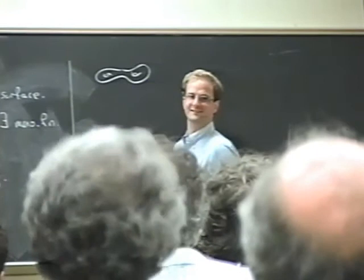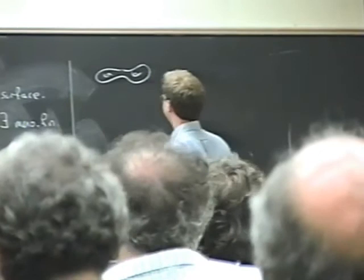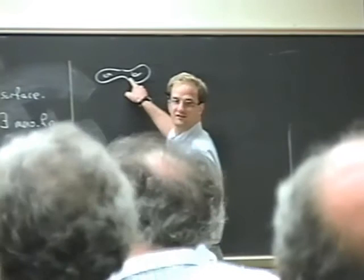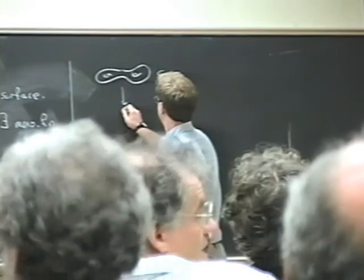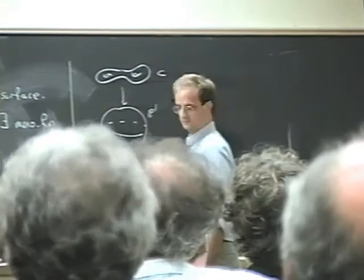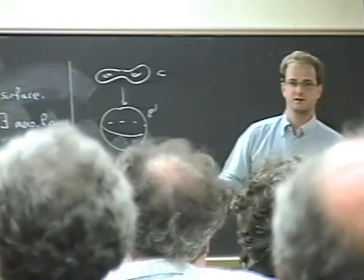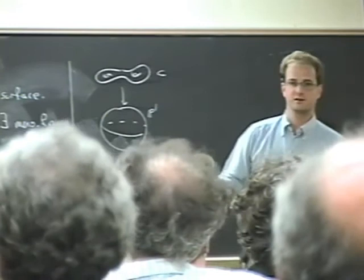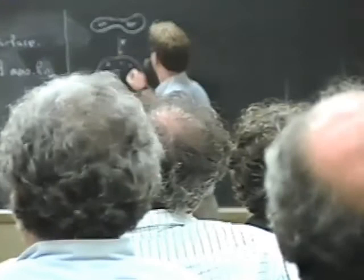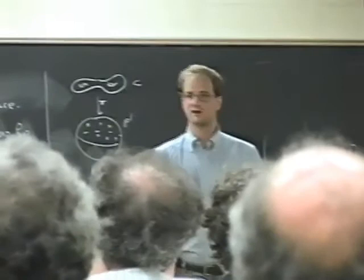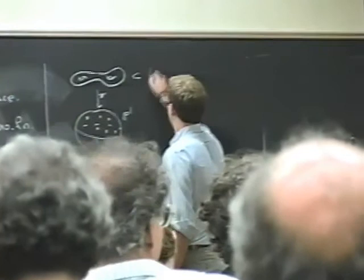So what this means is that X is defined in Q bar if and only if you can build the conformal structure on X by pasting together finitely many equilateral triangles, which is kind of a remarkable coincidence of algebra. And the idea of the proof isn't too bad.